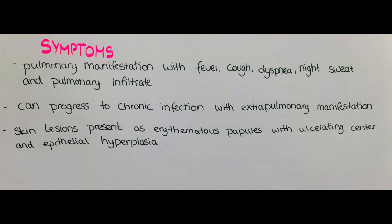The inhalation also leads to different symptoms. The pulmonary manifestation presents with fever, cough, dyspnea, night sweats, and a pulmonary infiltrate. This infiltrate is mostly seen in the upper lobes of the lung. It can progress to a chronic infection with extra-pulmonary manifestation, with involvement of the organ and skin systems mentioned before.